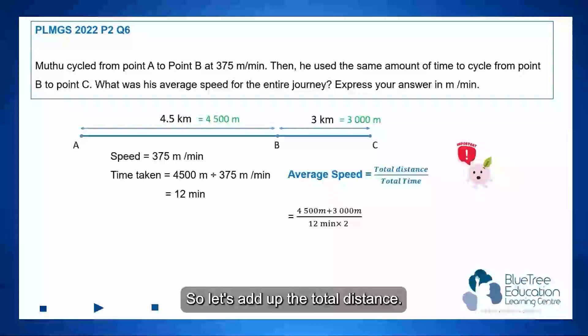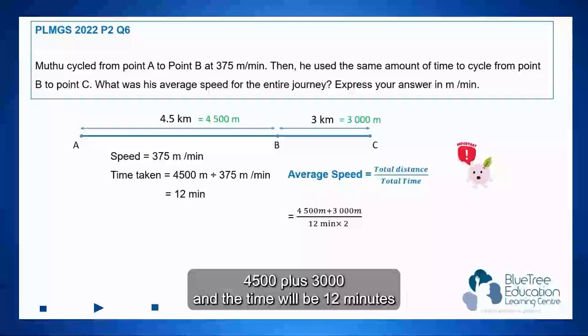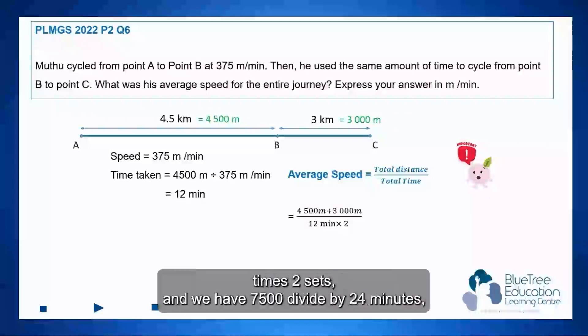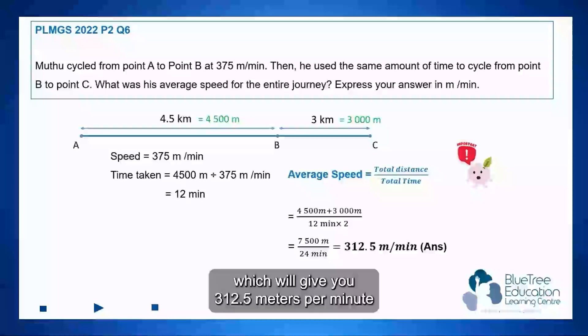So let's add up the total distance, 4500 plus 3000, and the time will be 12 minutes times 2. And we have 7500 divided by 24 minutes, which will give you 312.5 meters per minute. And this is the speed for Mutu for the entire journey.